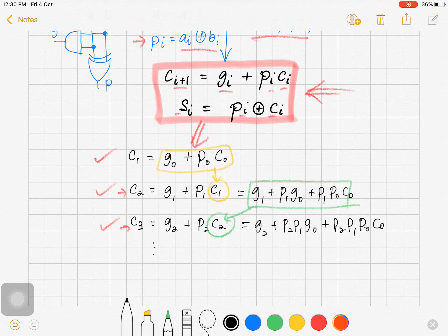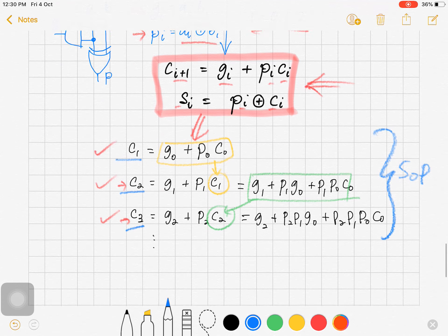Okay, here notice that all C1, C2, and C3, all of them are presented in the sum of product form, which can be constructed using two levels of logic like the following.